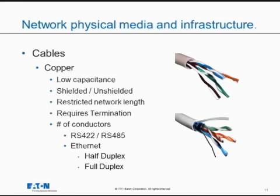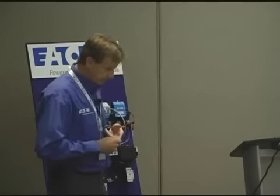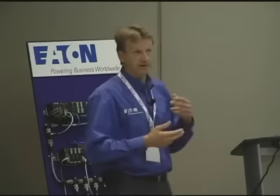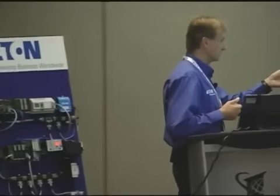Number of conductors is another consideration. Serial protocols like RS-232, RS-422, RS-485 dictate how many conductors you need. For Ethernet, there are specifications for how many pairs to use. This ties into half duplex versus full duplex: in a half duplex system you cannot transmit and receive at the same time — you transmit and then wait to receive. Full duplex means you have two sets of data lines — a transmit line and a receive line — so you can do both simultaneously, resulting in much faster communication speeds.